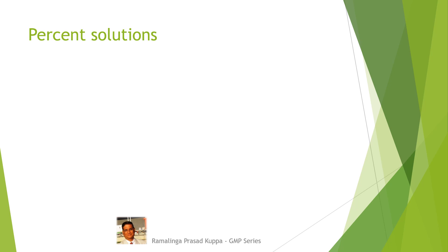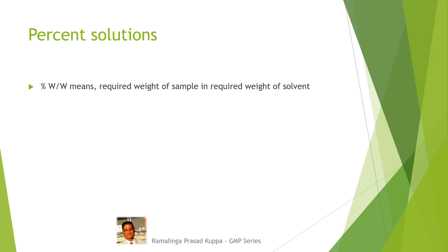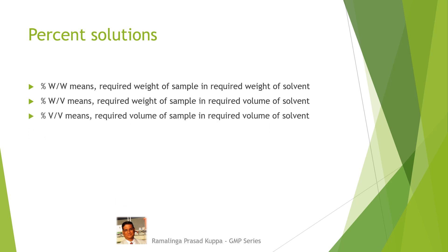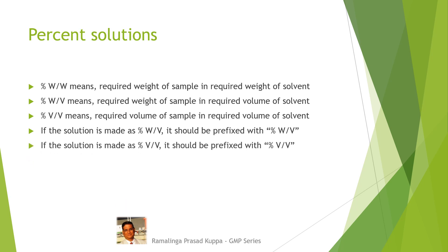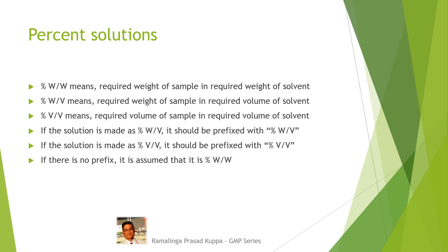Let us see how percentage solutions are given. This terminology should be remembered always. Percent weight by weight means required weight of sample in required weight of solvent. Percent weight by volume means required weight of sample in required volume of solvent. Percent volume by volume means required volume of sample in required volume of solvent. If the solution is made as percent weight by volume, it should be prefixed with percent w/v. If volume by volume, prefix with percent v/v. If there is no prefix, it is assumed to be percent weight by weight.